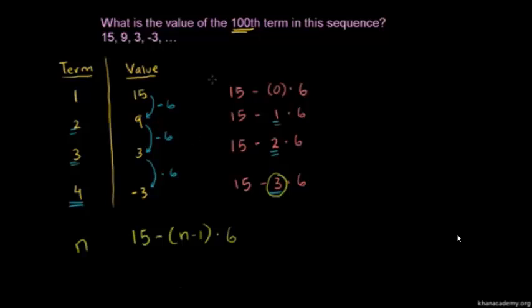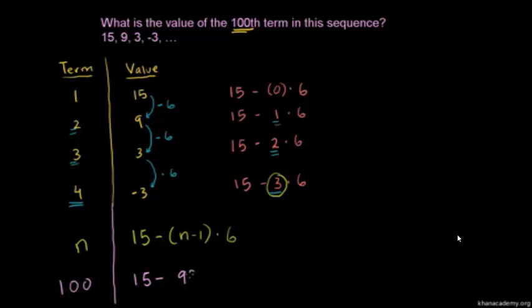So if you want to figure out the hundredth term of this sequence, you can just follow this pattern. The hundredth term is going to be 15 minus (100 minus 1), which is 99, times 6. For term 1 you had 0, term 2 you had 1, term 3 you had 2, so for term 100 you're going to have 99.